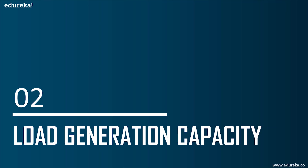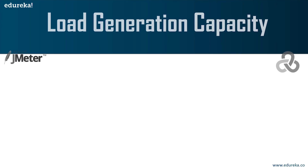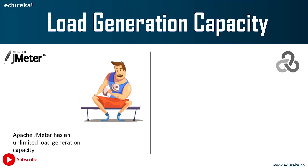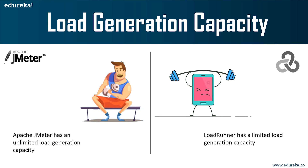The next factor is load generation capacity. Apache JMeter has an unlimited load generation capacity — it can handle as many threads and users as you provide without any limitation or performance degradation. LoadRunner, on the other hand, has a pretty limited load generation capacity and you cannot overload it with too many users or threads. So if you are looking for a tool that will perform heavy testing with many users and thread groups, you should definitely go for Apache JMeter.